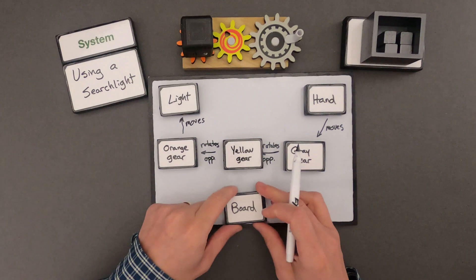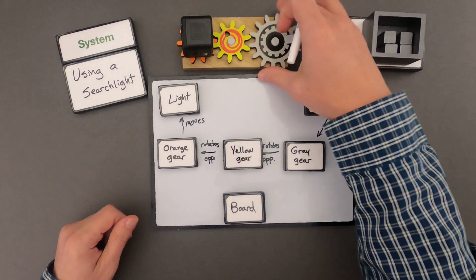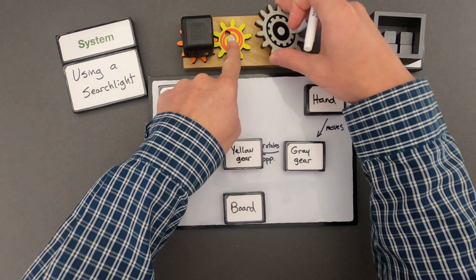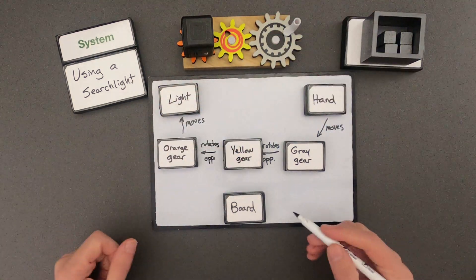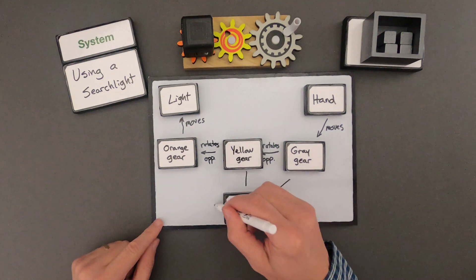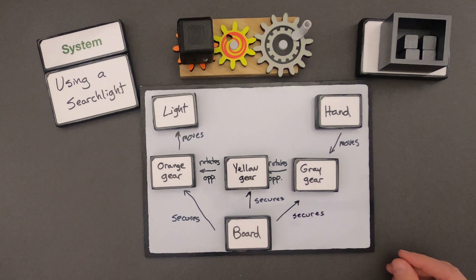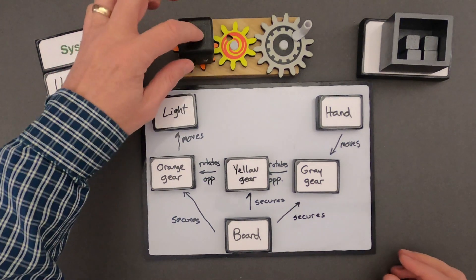Now there's one last piece to the system, and that's going to be the board, this board in the back. And if I pull out one of the gears, you can see that there's a hole in it. So the gear is secured into the hole.